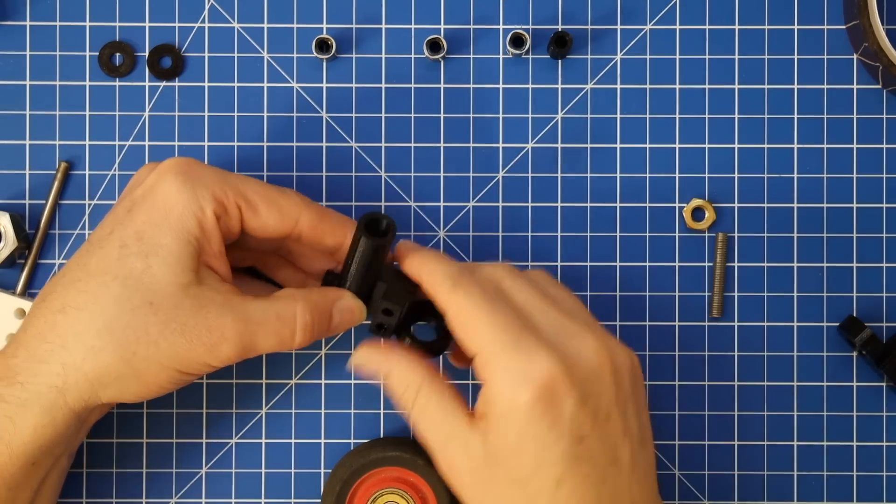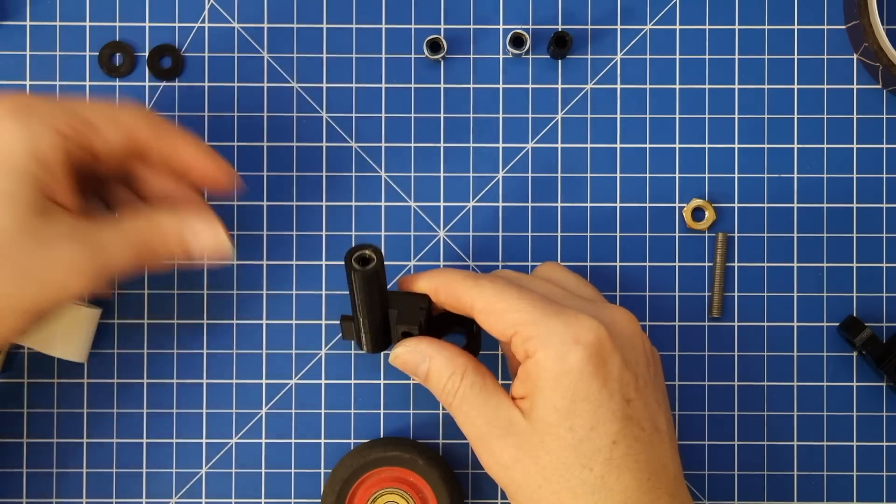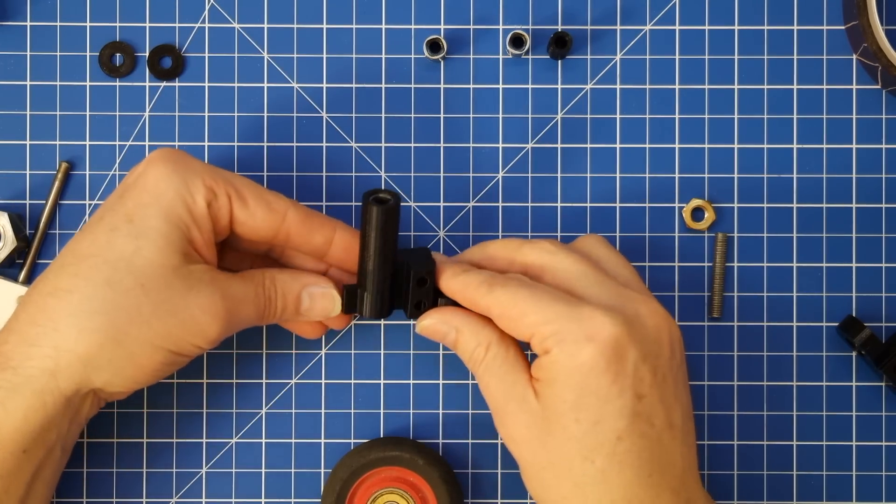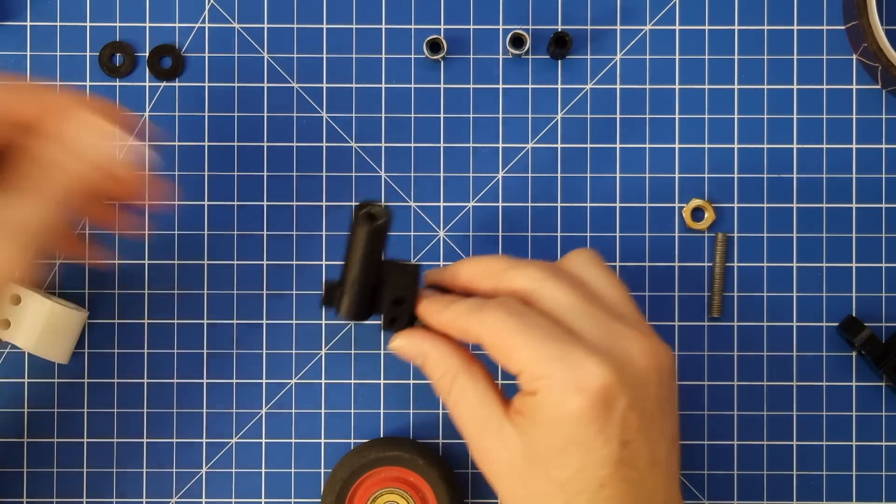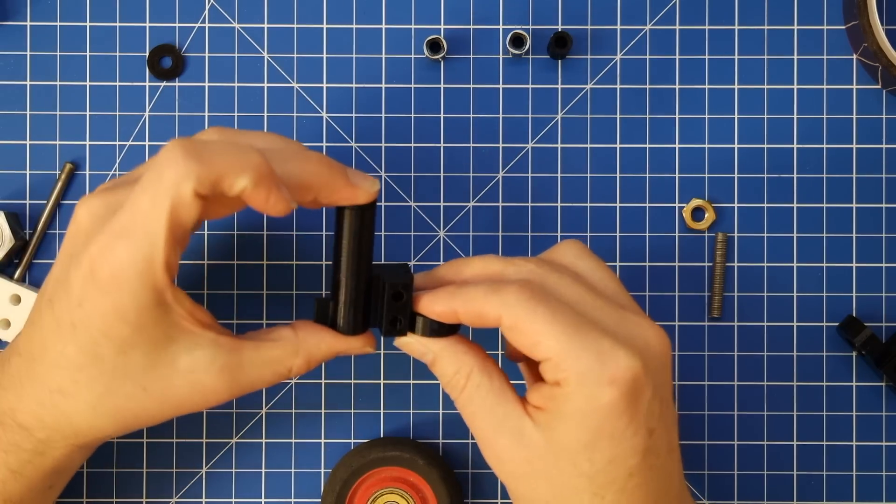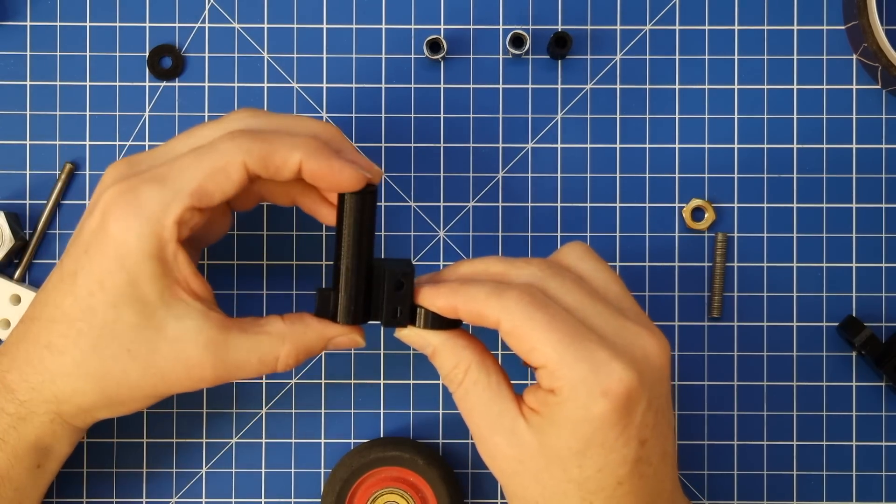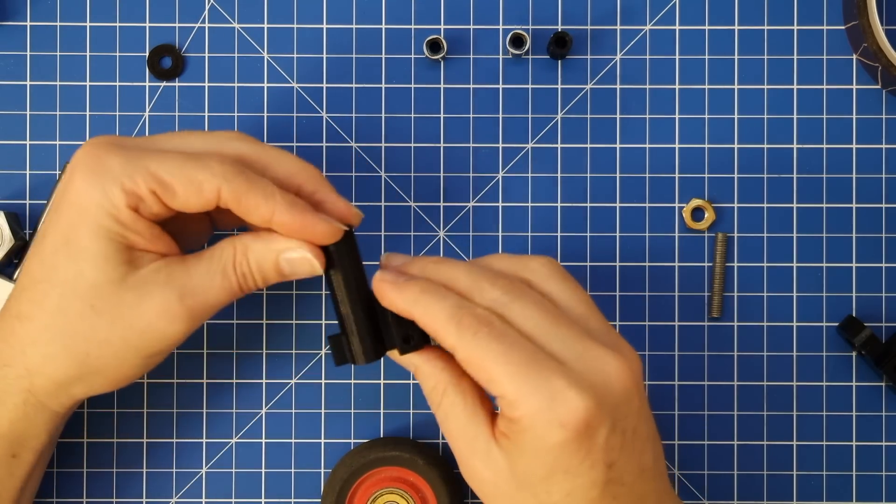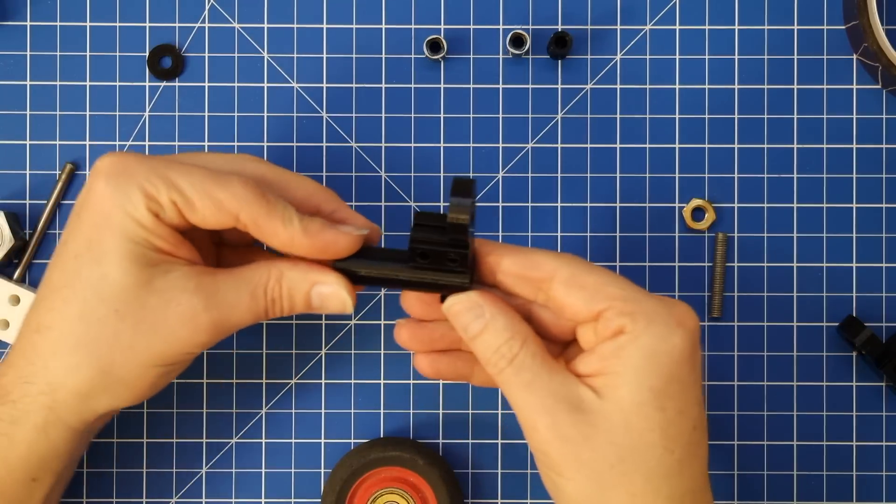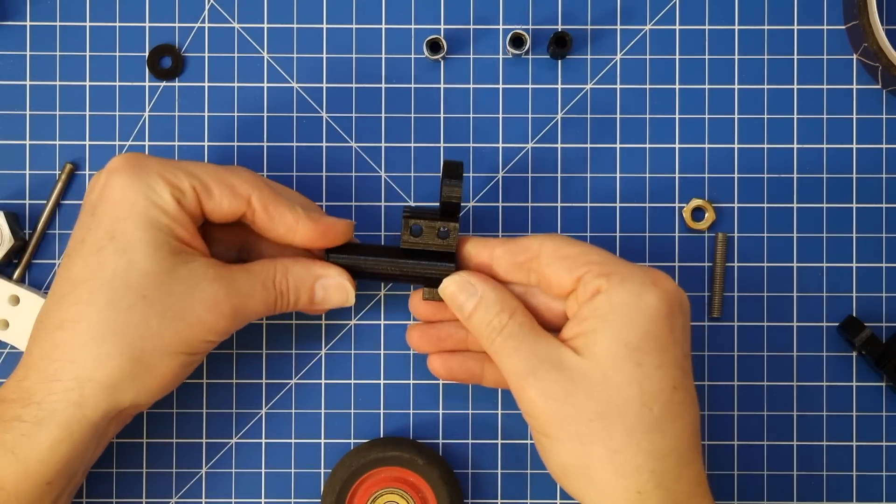I've got the spacer and then the second linear bearing is added and then I have these top hats here and that will also be glued on. And when all of this is in place I've got a very rigid setup.